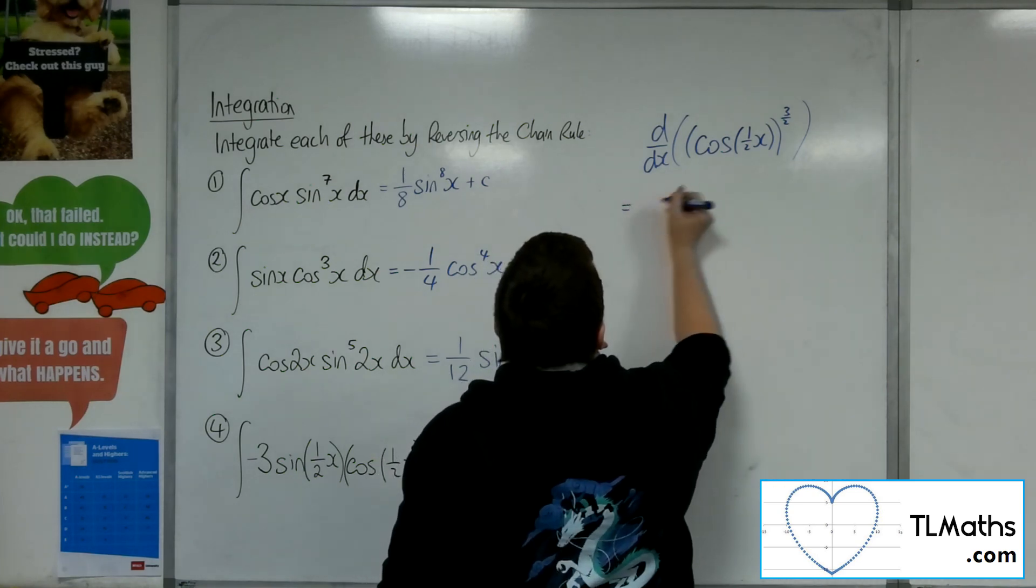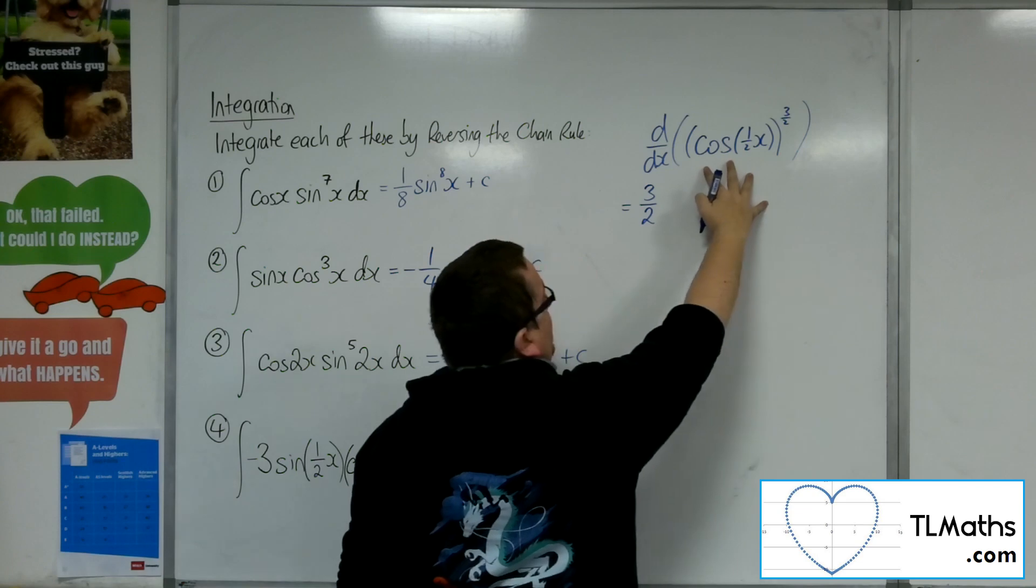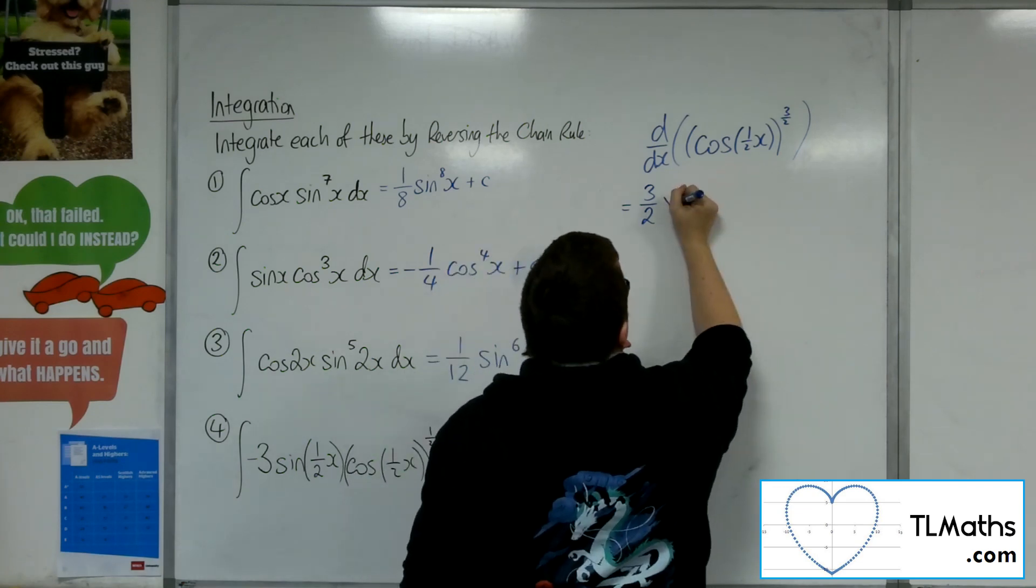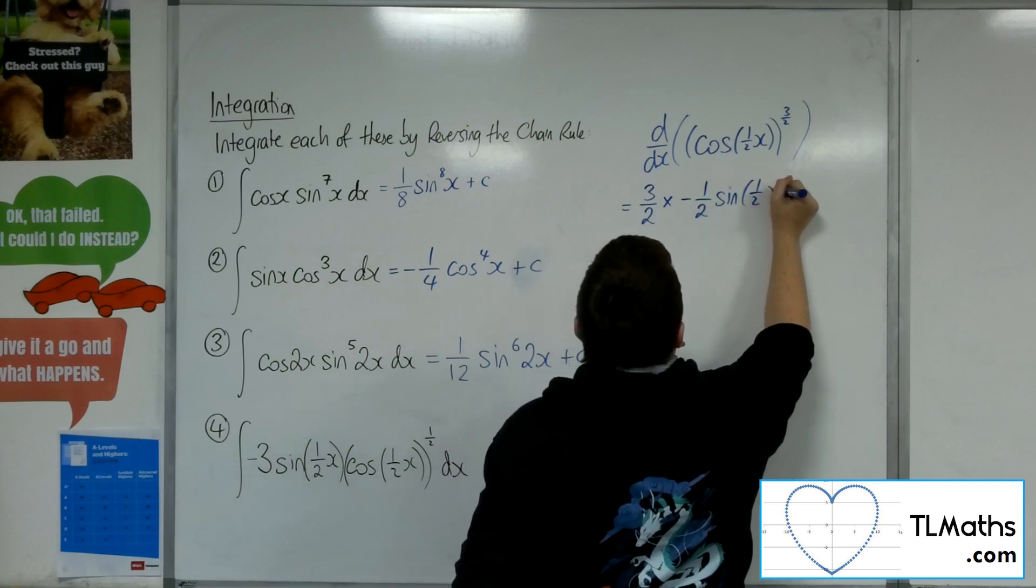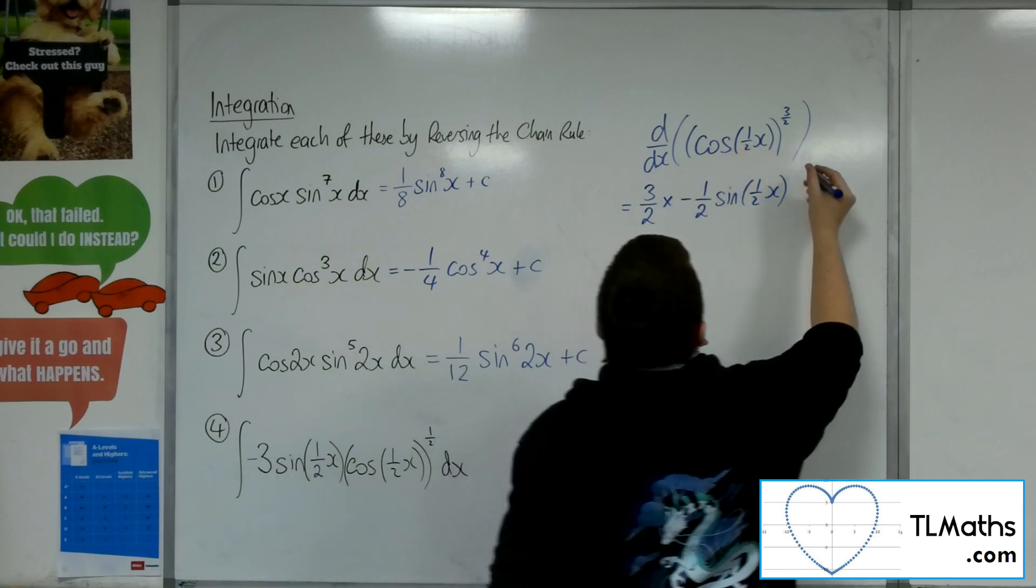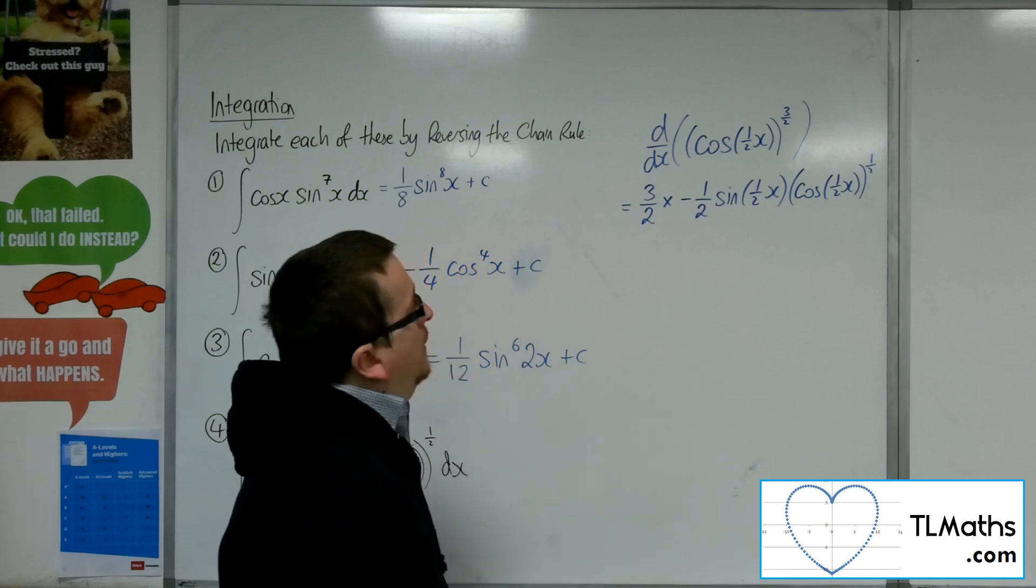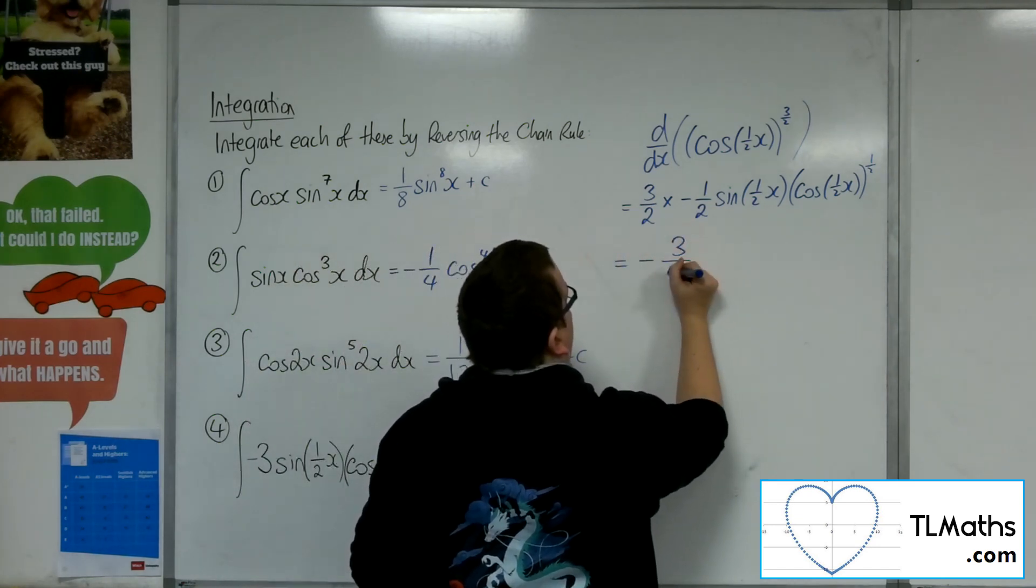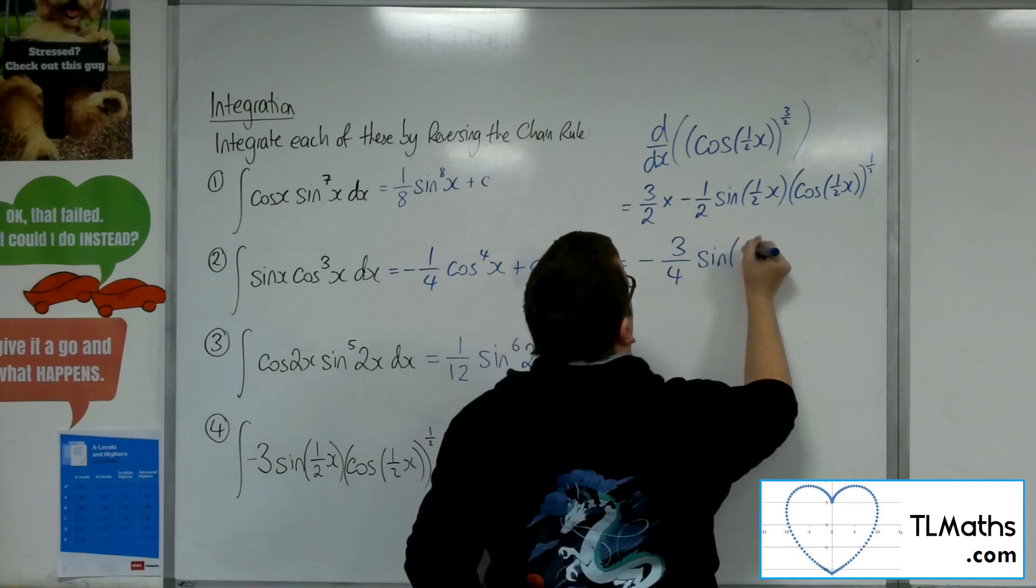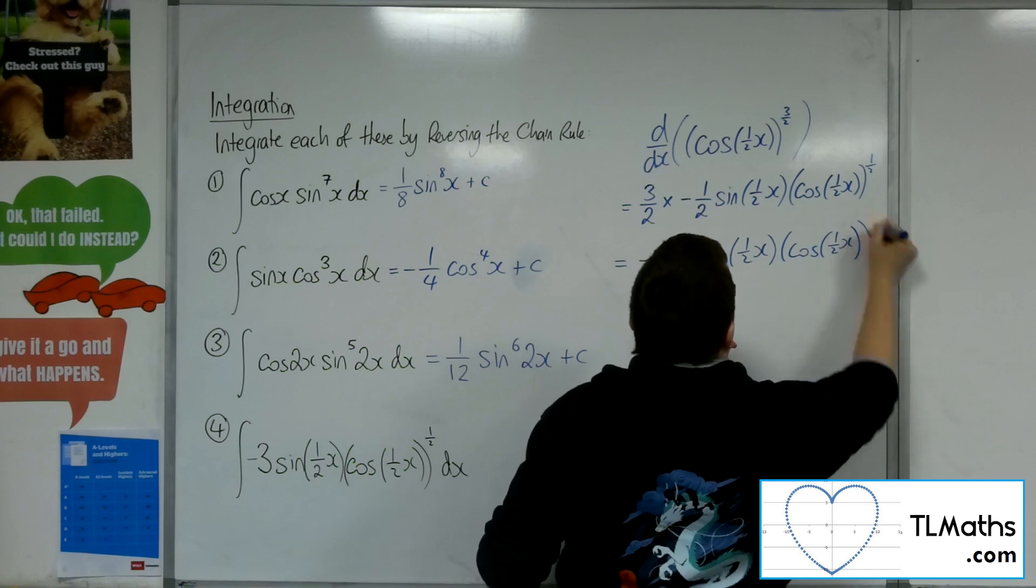So I'm going to have the 3 halves coming down to the front. I've got the derivative of what's inside coming outside. So that would be minus 1 half sine of a half x. And then I'm going to drop 1 from the power for the cos half x. So the 3 halves multiplies with the minus 1 half to give me minus 3 quarters sine of a half x cos of a half x to the half.